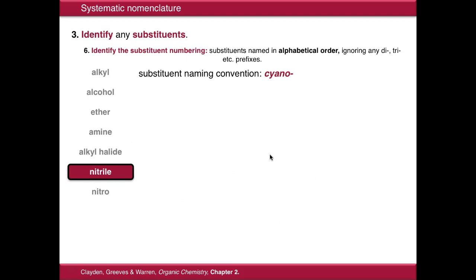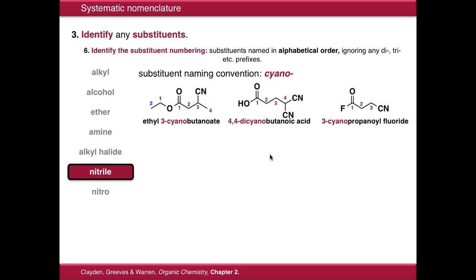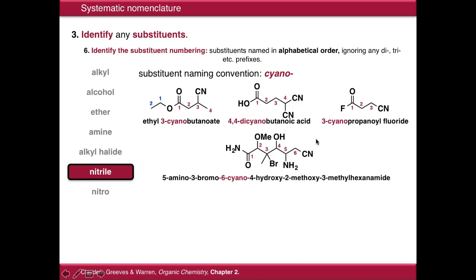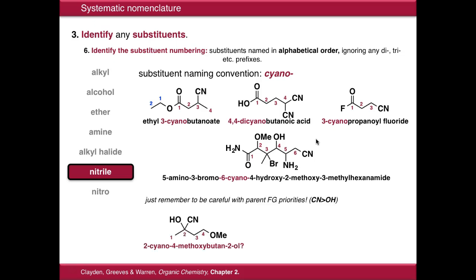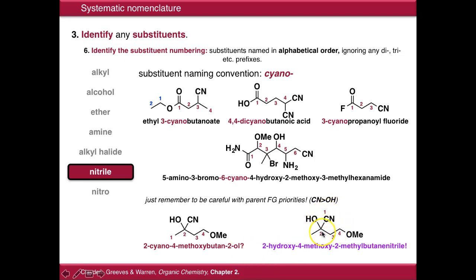Nitriles are named cyano when they are substituents. So: ethyl 3-cyanobutanoate, 4,4-dicyanobutanoic acid, and so on. Just be careful with your functional group priorities. It's tempting to call this 2-cyano-4-methoxybutan-2-ol, but actually your cyano group has now become the parent functional group because it's higher up the priority list than the alcohol. So in this case it's 2-hydroxy-4-methoxy-2-methylbutanenitrile.